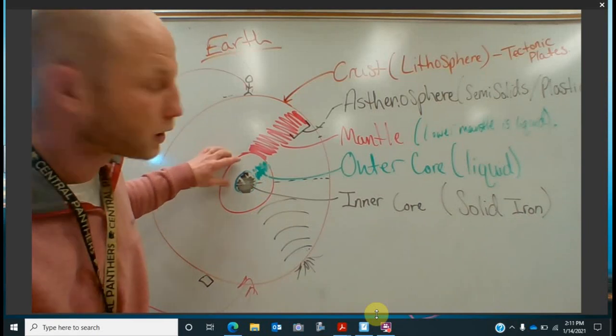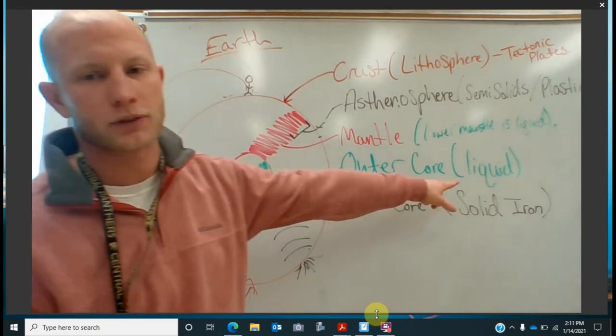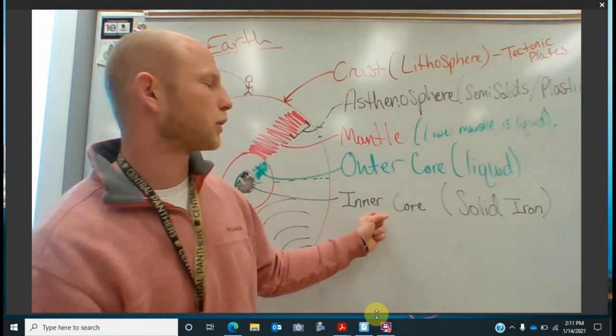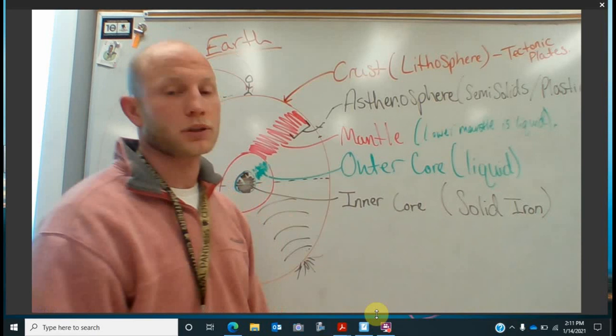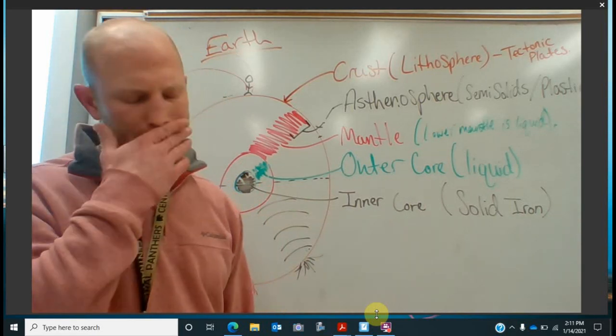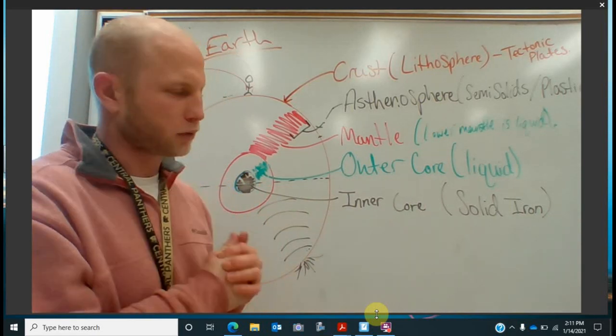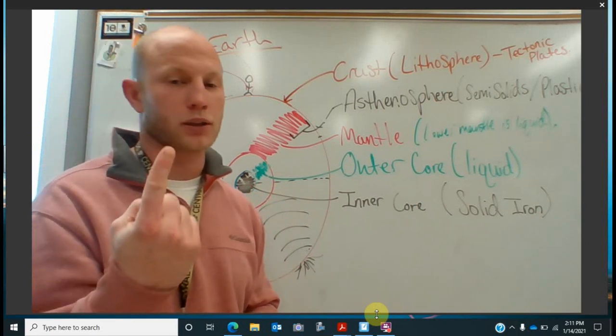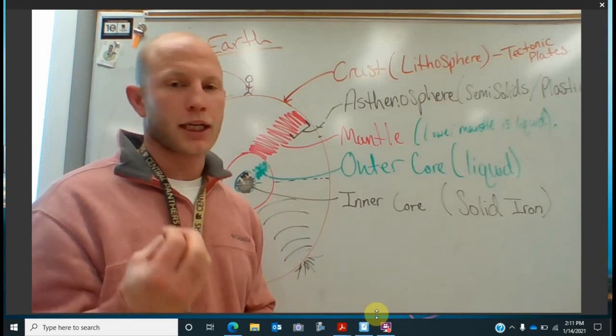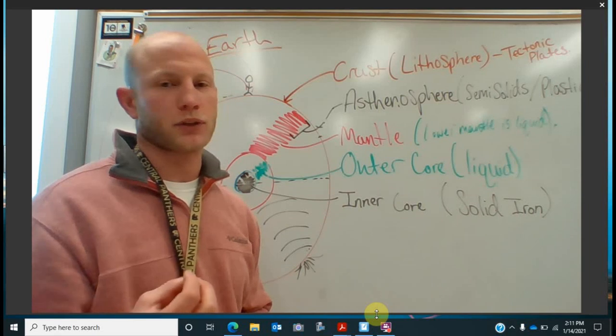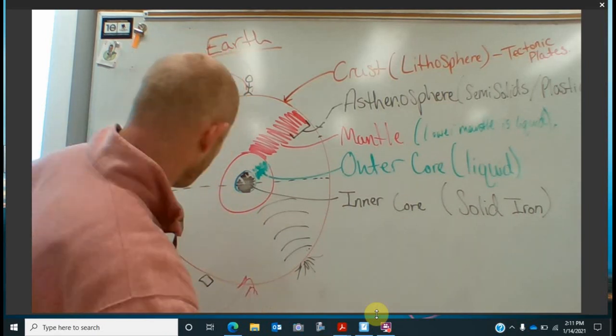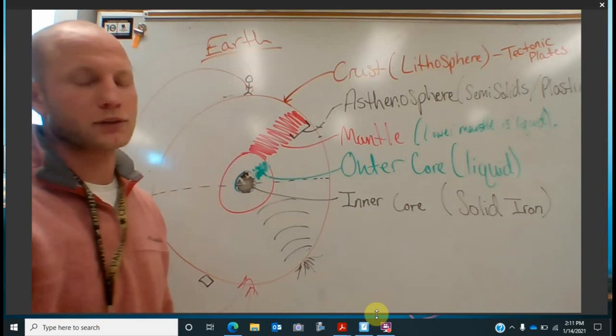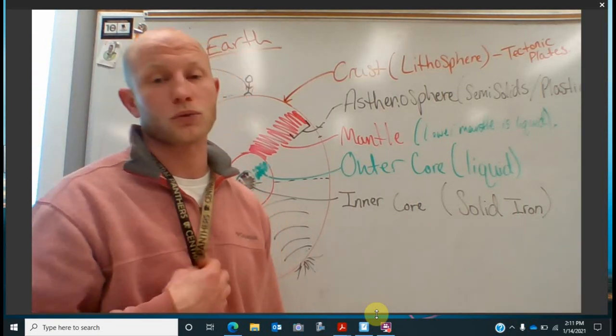And then here's our core right here. So we have two layers to our core. Our first outer layer is liquid. So this guy's pretty warm. And then our inner layer here or inner core here is solid iron, actually. And so our two cores here, our outer core and our inner core, they're actually spinning around each other. And as they spin, they actually create a magnetic field, the earth's magnetic field.